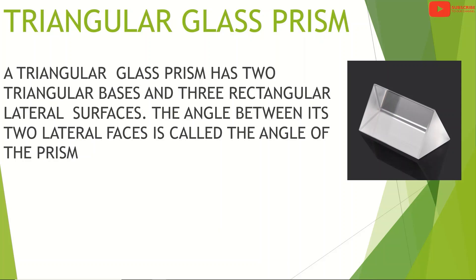A triangular glass prism has two triangular bases and three rectangular lateral surfaces. The angle between its two lateral faces is called the angle of the prism.